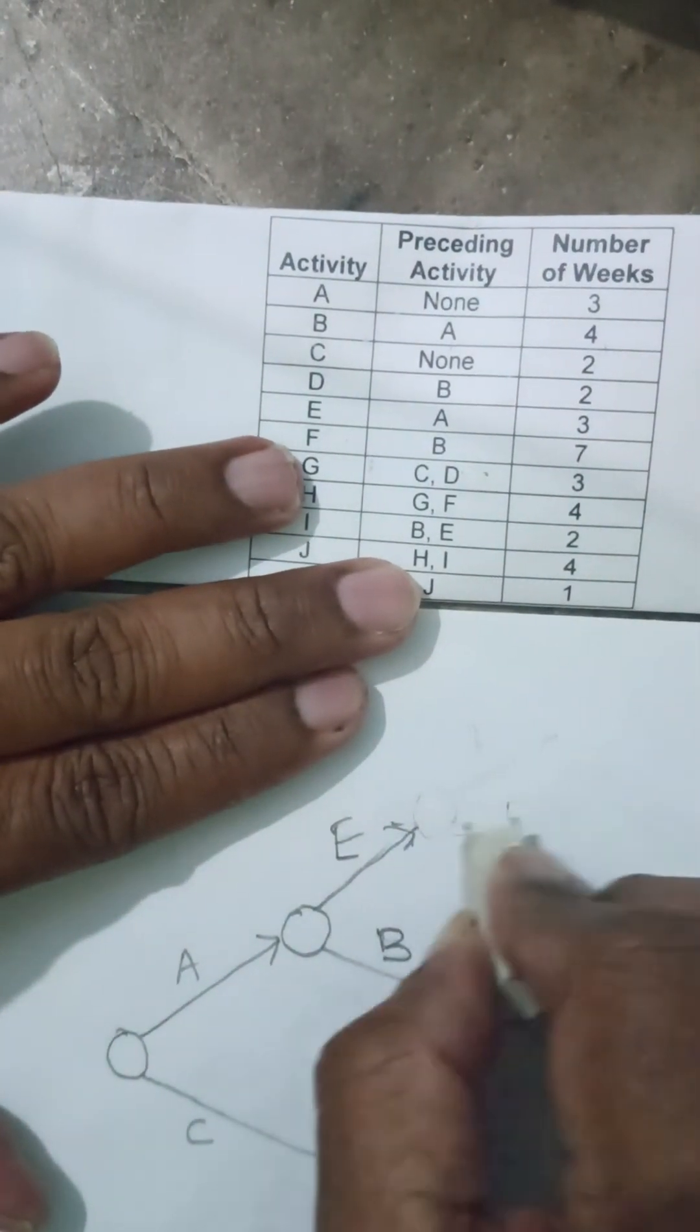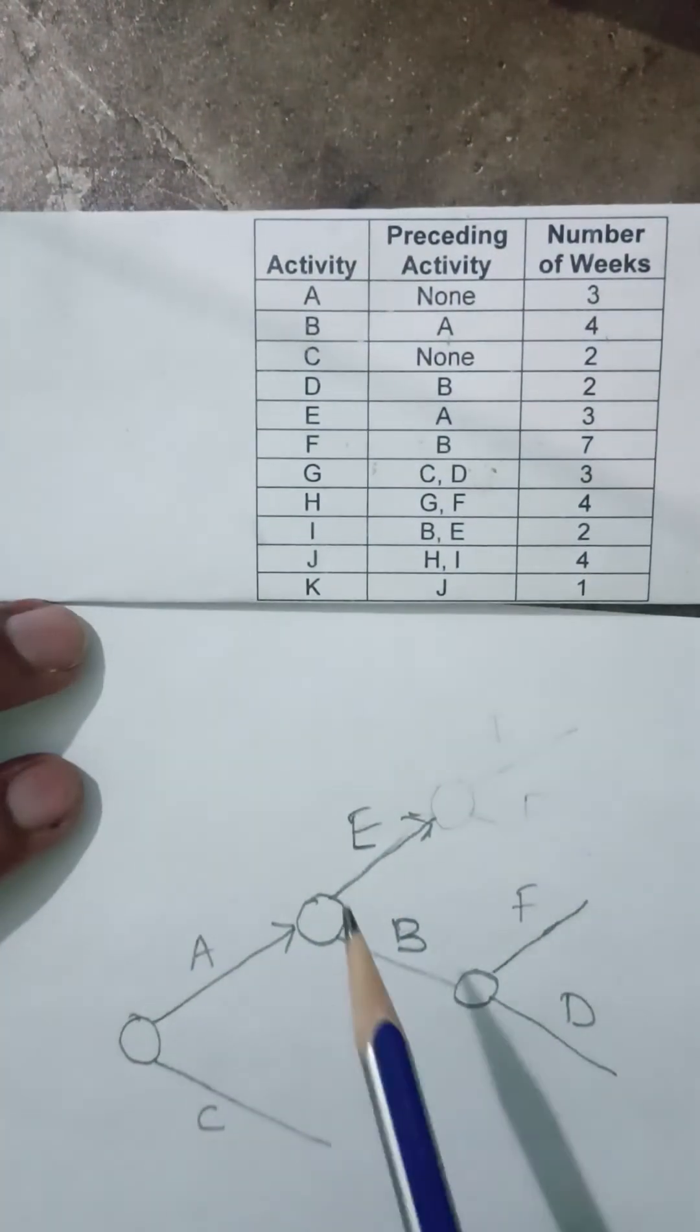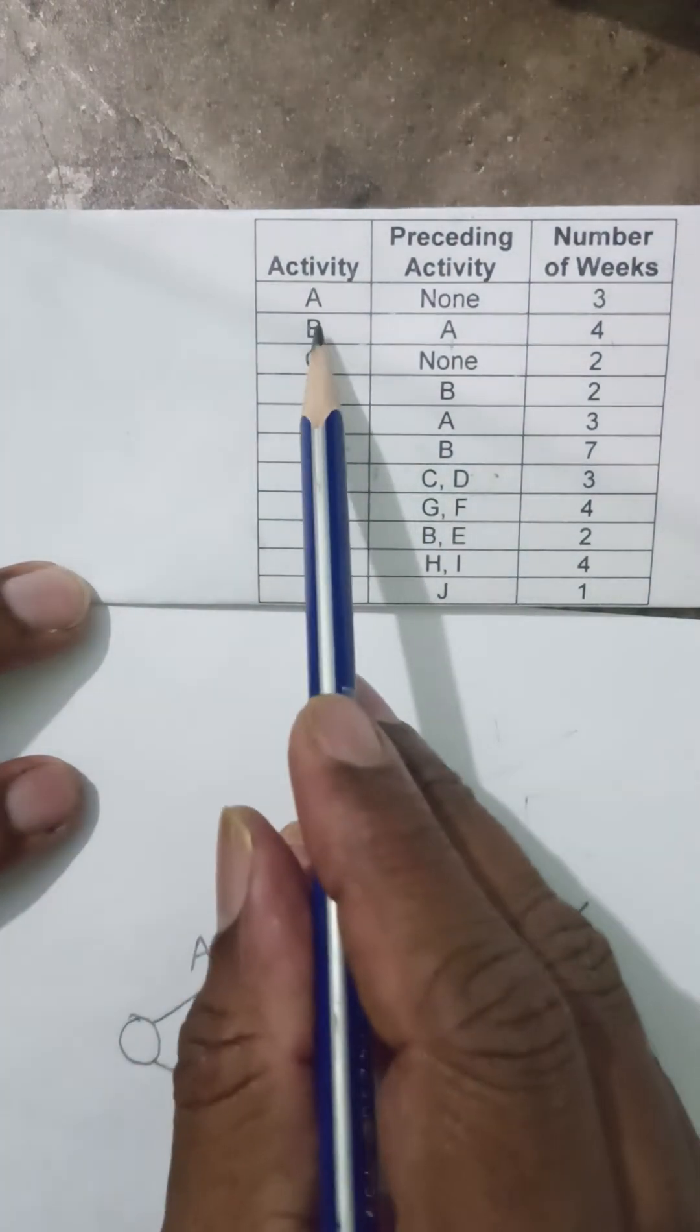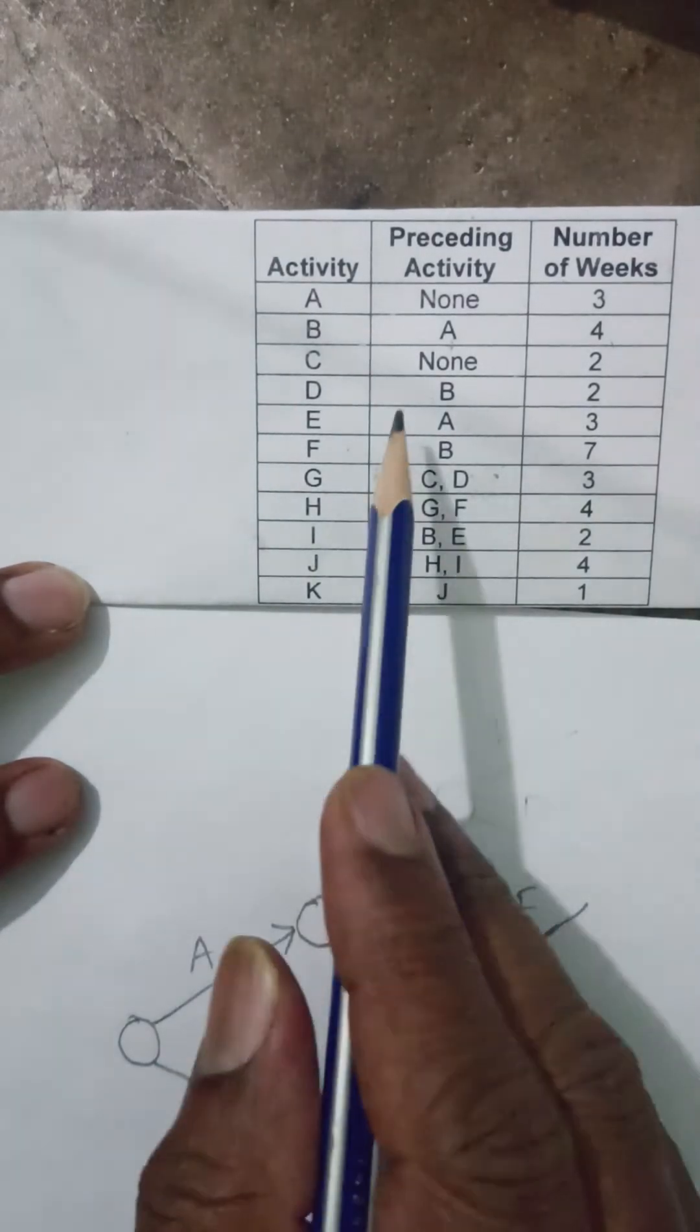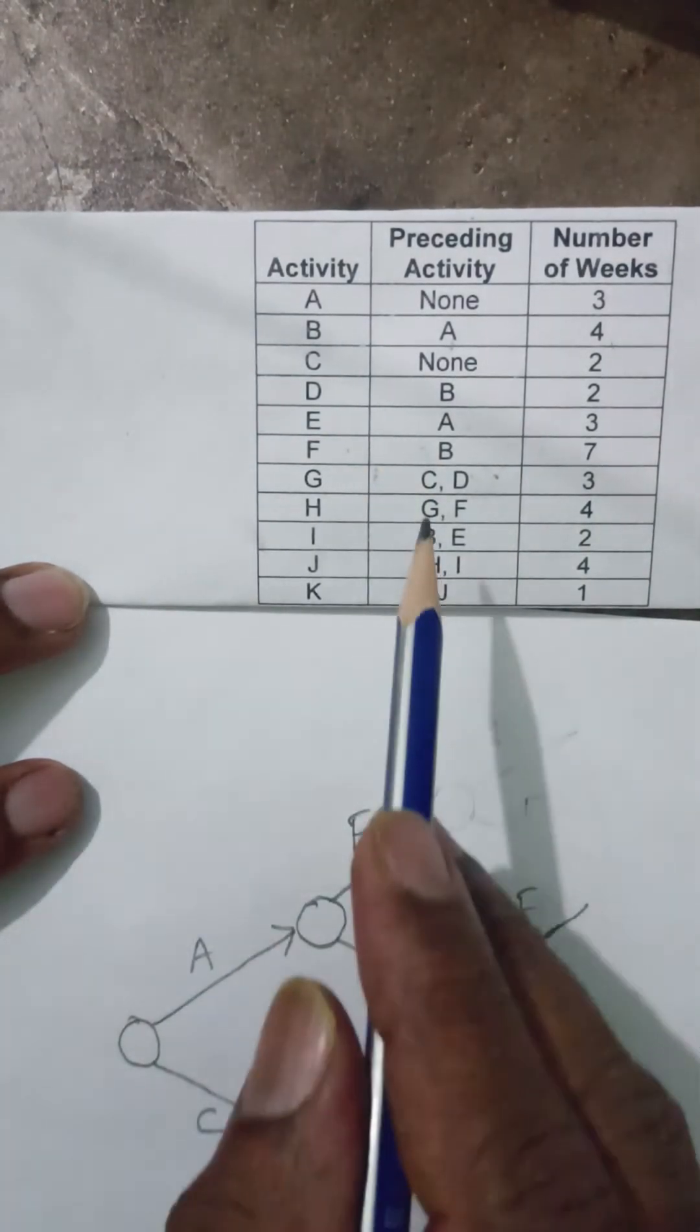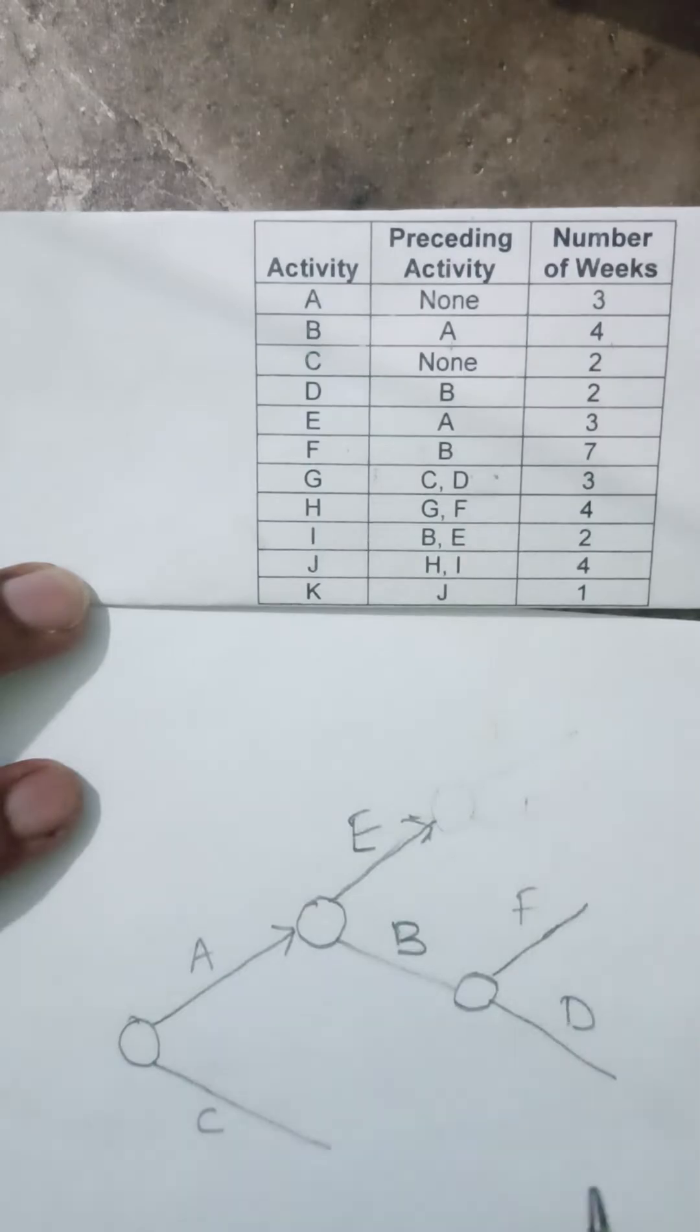I have quickly rearranged. I can cross check whether I have done it right. A, E is starting, and B is starting. Correct. From B, D is starting as well as F is starting. Correct.